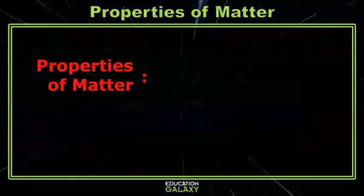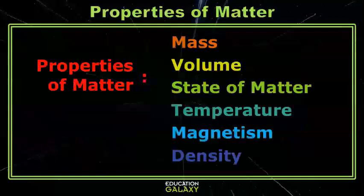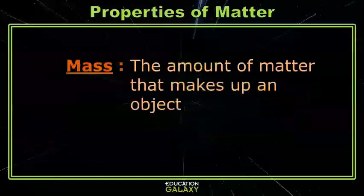The properties we'll go over today are mass, volume, the states of matter, temperature, magnetism, and density — or an object's ability to sink or float.